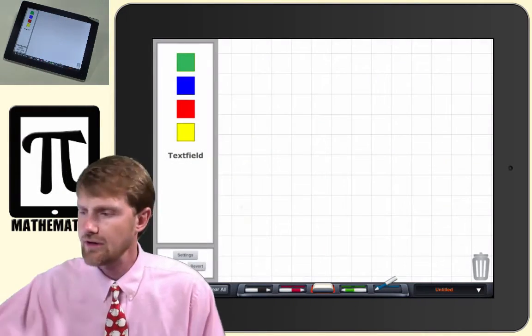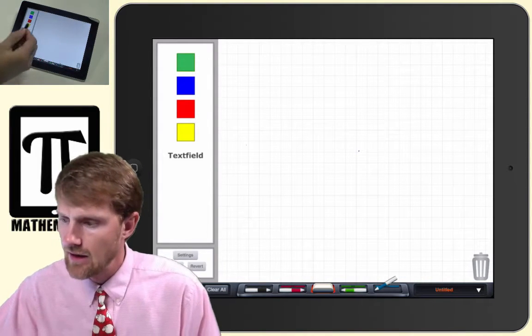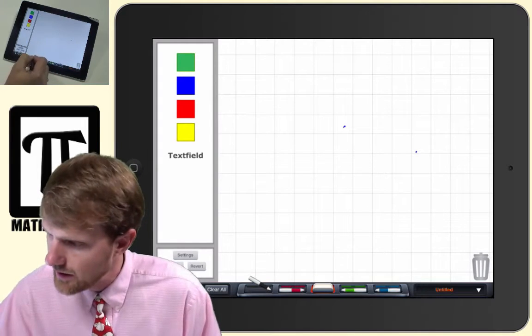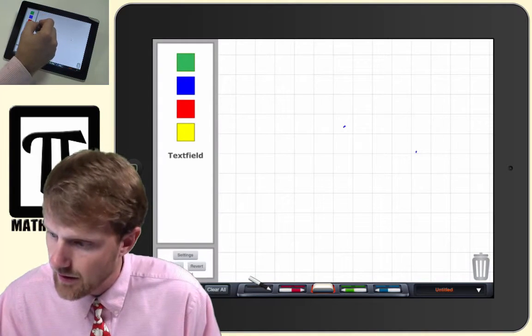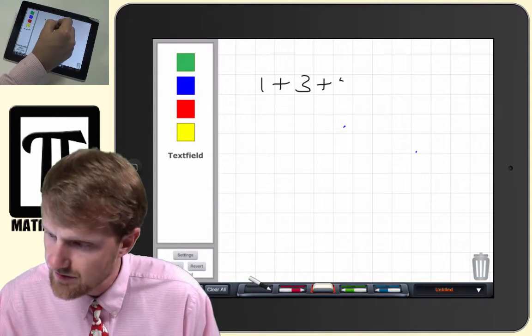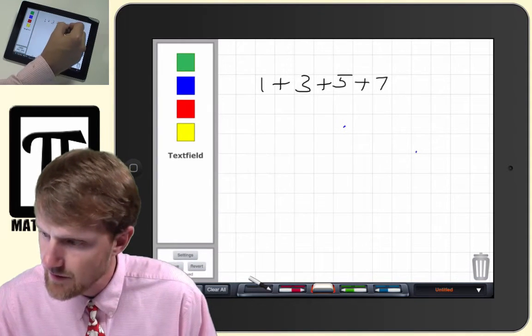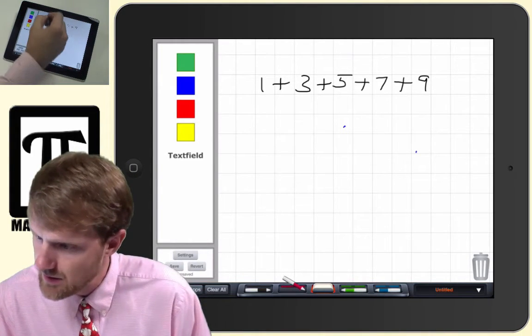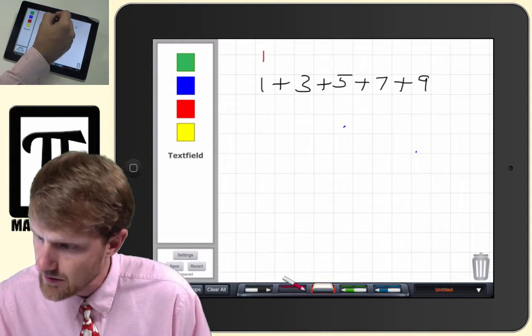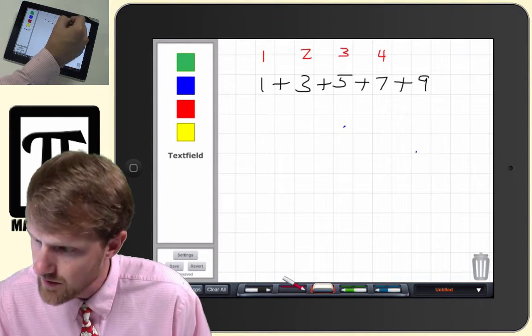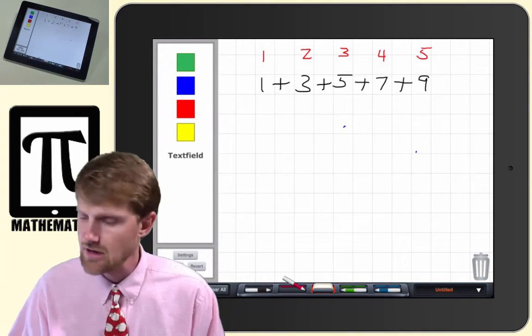So here we are. We cleared it out. And the idea is we want to create a way of, we have 1 plus 3 plus 5 plus 7 plus 9. And so this is going to be the first consecutive number, the second consecutive number, the third, the fourth, and the fifth consecutive number.